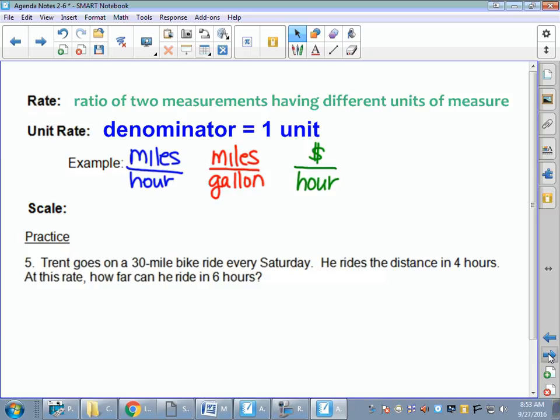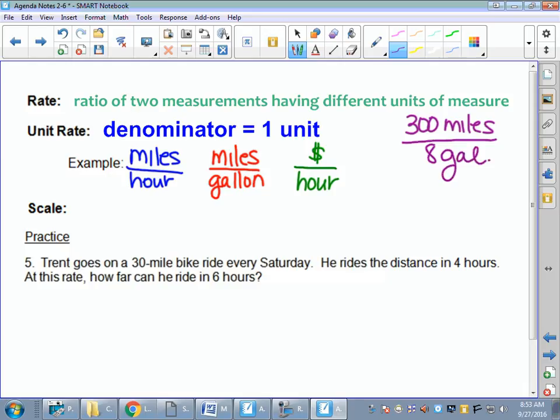So a unit rate is when you've simplified it down and your denominator equals 1. I could tell you my rate is I went 300 miles and used 8 gallons of gas. What was my rate? 300 miles and 8 gallons. If I do the division, 300 divided by 8, I'm going to know what my unit rate is or how many miles for every one gallon. We could solve that by a proportion as well.